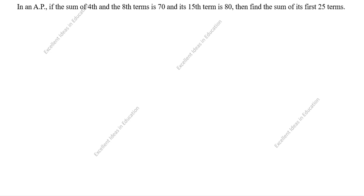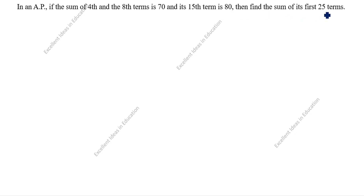Hi friends, welcome to my channel Excellent Ideas in Education. Today we are going to solve this arithmetic progression problem. This is a board exam problem. In an AP, if the sum of the 4th and 8th term is 70 and its 15th term is 80, then find the sum of its first 25 terms.